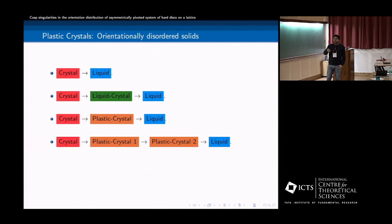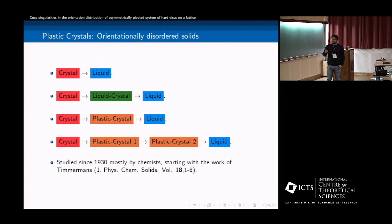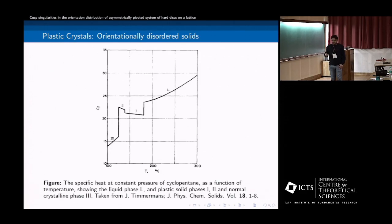And you can have different within, for example, you can have plastic crystal one where the translation, the lattice is different, plastic crystal two, it's changed to a different crystal lattice. And then you can, so this plastic crystals were first studied in 1930 by chemists starting with the work of Timmermans. So here is a graph, a plot of specific heat at constant pressure of cyclopentane as a function of temperature. So here as you can see, the liquid phase here and there are two plastic phases, phase one and phase two, and there's a crystal phase.